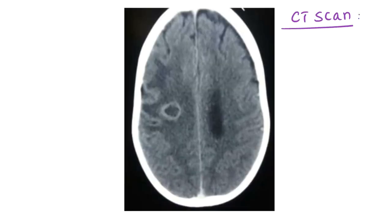The second part of the question says that the child is being evaluated and this picture is given. You can notice this is a CT scan where you can see something occupying an area of the brain — a space-occupying lesion. It appears as a single lesion, and you can see something white, like a capsule, surrounding that particular space-occupying lesion.